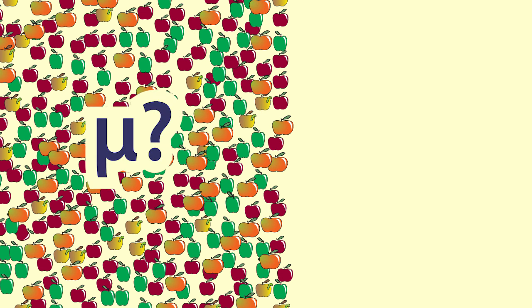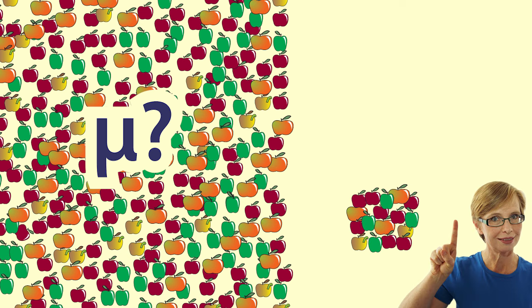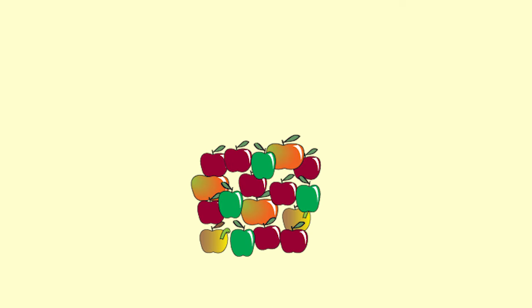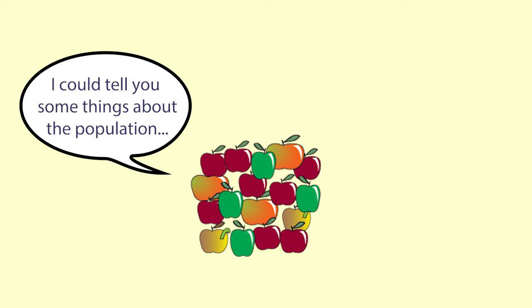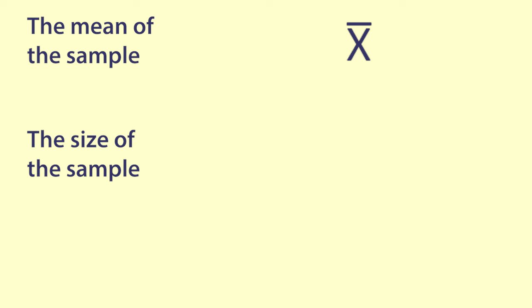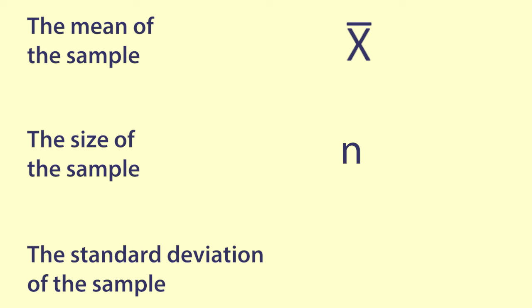Usually we do not know the mean of the population so we take one sample. We use what we know or find out from that sample to make an inference about the mean of the population. We use the mean of the sample, x-bar, the size of the sample, n, and the standard deviation of the sample, s.